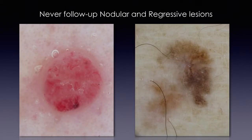Usually, we never follow up nodular lesions and regressive lesions. In nodular lesions, this is because if we are wrong in our diagnosis, we are monitoring a nodular melanoma, which means a higher Breslow thickness at the end of the follow-up. And extensive regressive lesions, because this is a clear-cut melanoma feature anyhow.